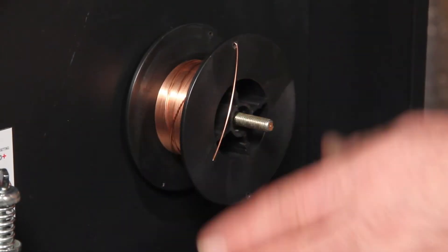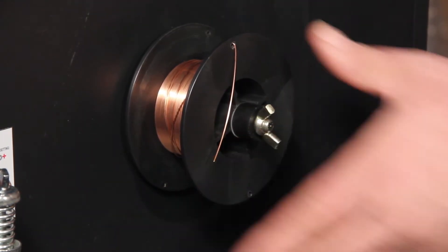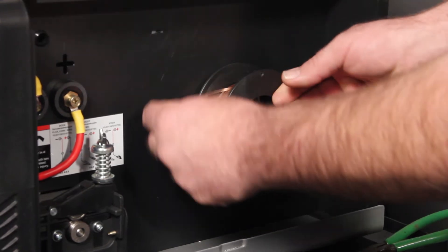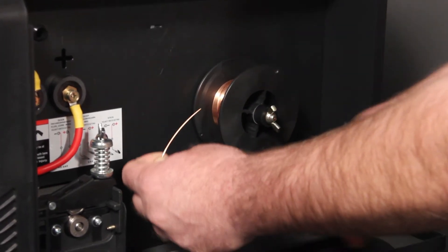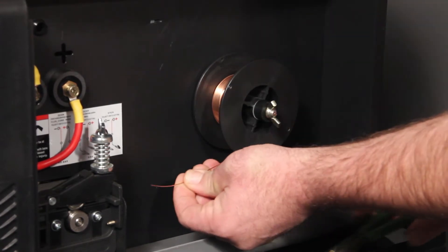Install the welding wire spool on the welder so the wire feeds from the bottom of the spool. Hold the wire with one hand and with the other hand snip the end to get a straight edge. Be certain not to let go of the wire or it will unravel.